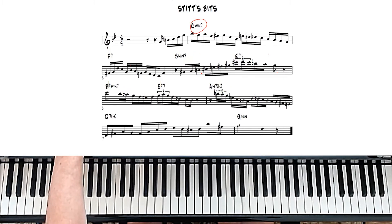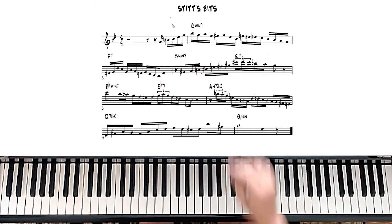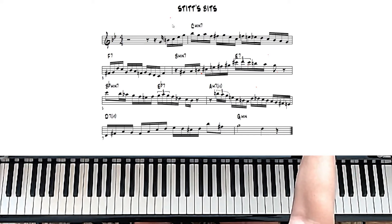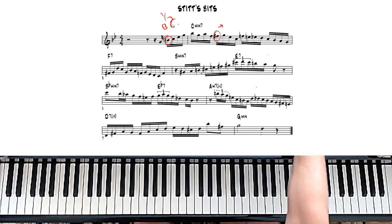The second concept is using pickup notes on downbeats. You're spelling the chord but starting from a half step below, then spelling the chord on the beat. A typical improviser does that off the beat — where the half step lands on the end of the beat. What Sonny does is he plays it on the beat: B to C is a half step on the beat, then F-sharp to G on the beat, then another half step on the beat. He's playing the half step below on the beat, which creates a lot more tension.